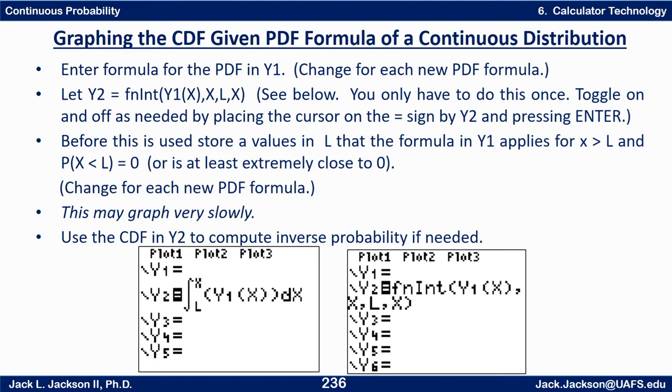What does L need to be? Well, L needs to be something so that the formula does apply from to the right of L and the probability to the left of L is zero or is at least extremely close to zero. So in some cases L should be negative infinity but we can't really put that in. So we need to put something in instead of negative infinity so that the probability to the left of that L value is so close to zero it doesn't really hurt us.